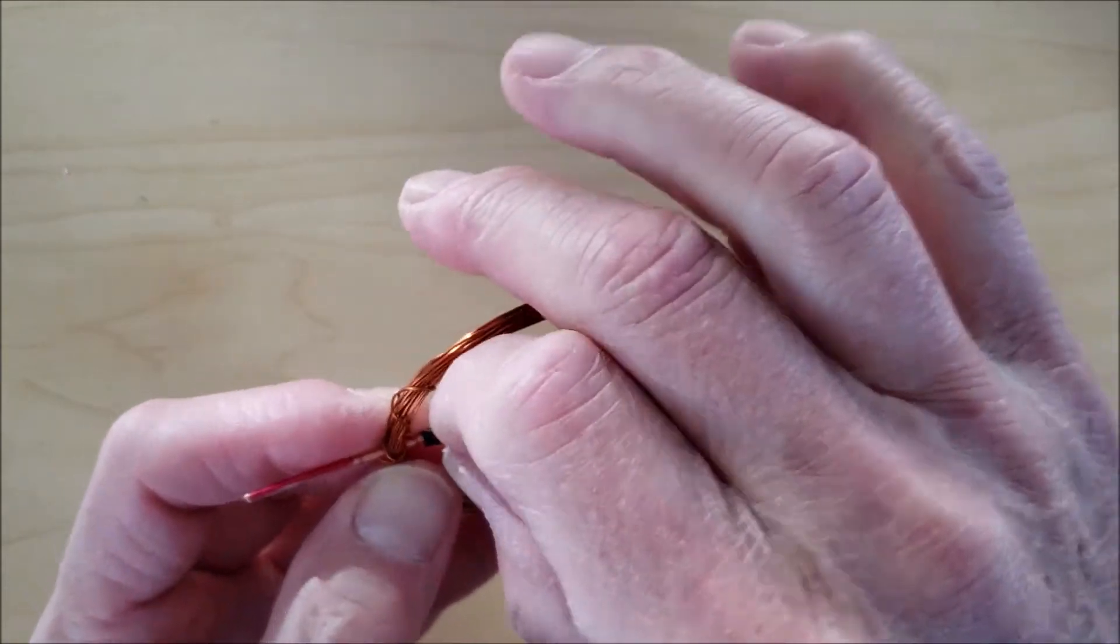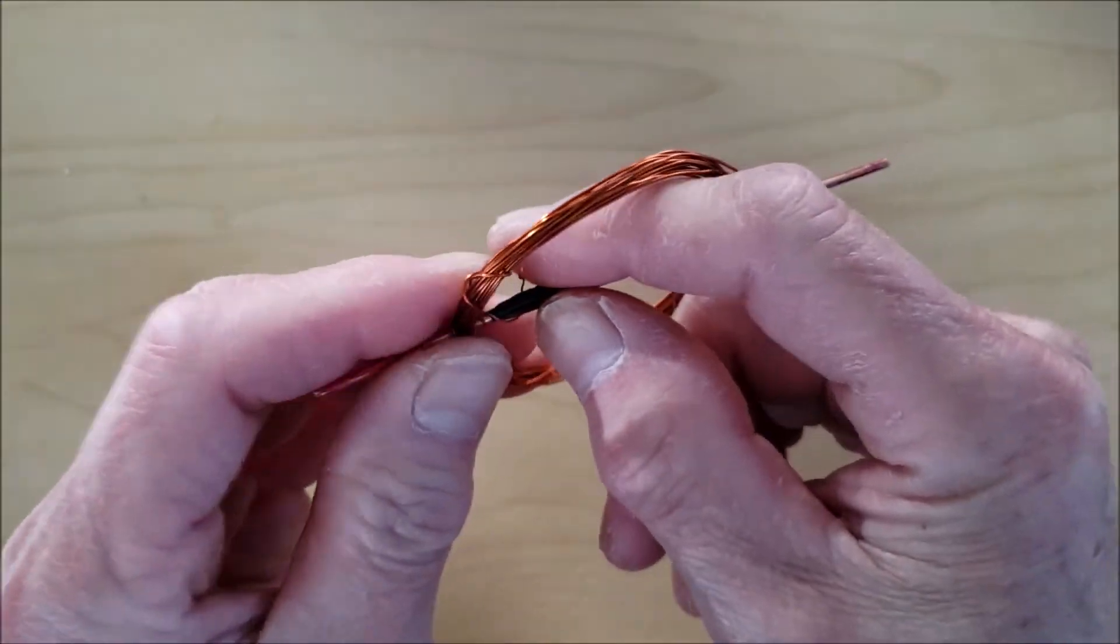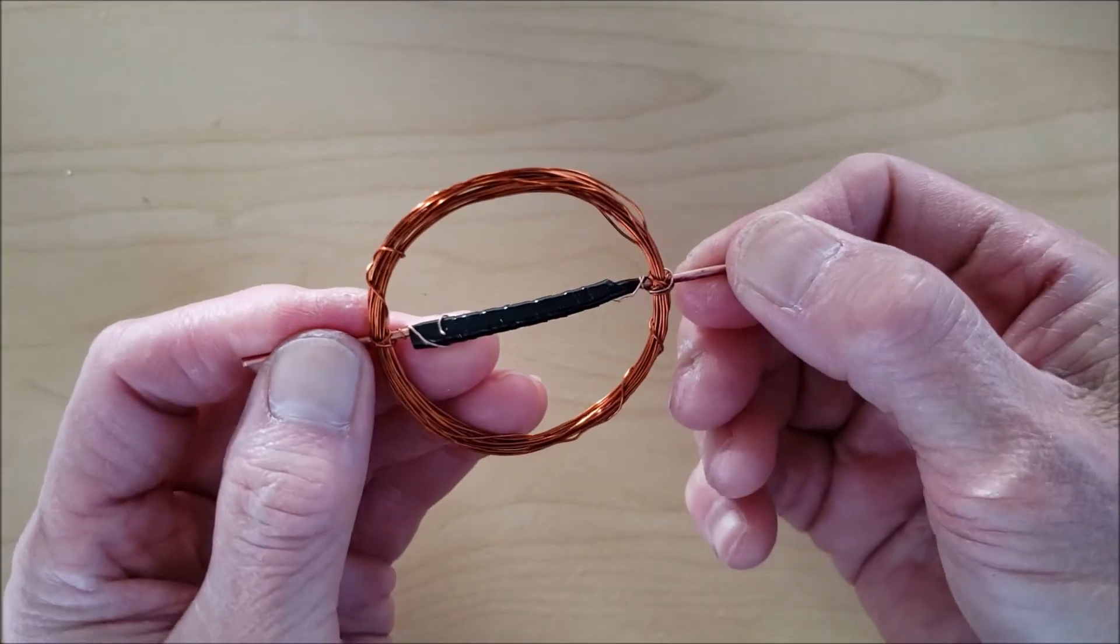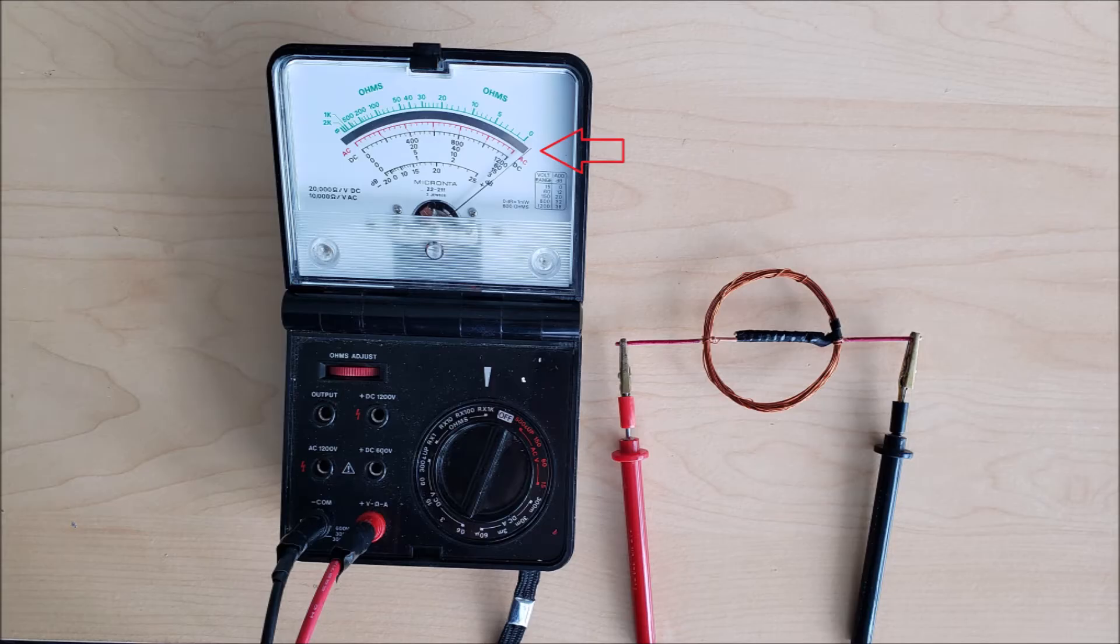Wrap some wire around the tape part of the shaft to make it difficult for the shaft to turn in the coil. Make sure the shaft is straight and the coil is symmetric around the shaft.